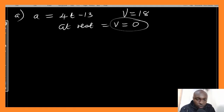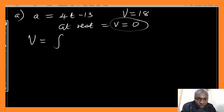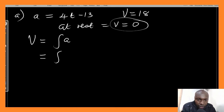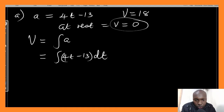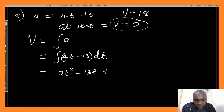Since we're given acceleration, to get velocity we shall integrate the acceleration. So velocity is given by integrating 4t minus 13 with respect to t. Integrating this gives 2t squared minus 13t plus a constant c.